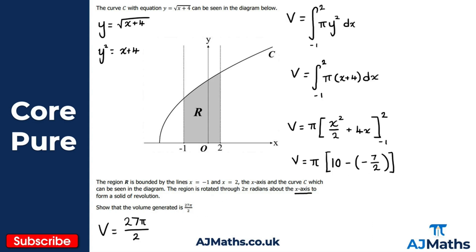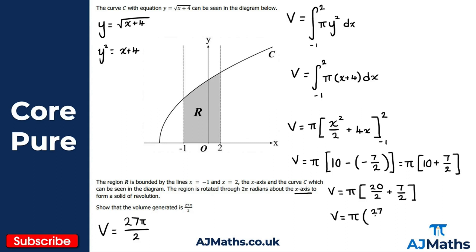You could use a calculator here, but I'll do it by hand to show the full process. V = π × (10 - (-7/2)) = π × (10 + 7/2). Converting 10 to 20/2, we get π × (20/2 + 7/2) = π × 27/2. So V = 27π/2 — exactly what we needed to show.